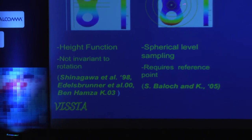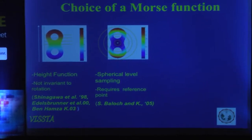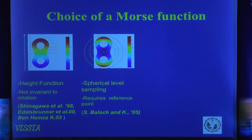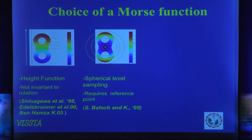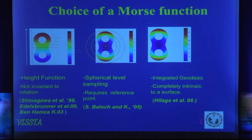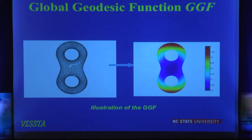In 2005, a former student of mine proposed the idea of the isotropic distance — you choose a reference point at the centroid and measure the distance from the centroid to the surface. You can prove it is a Morse function satisfying all its properties, and it is pose invariant — rotation invariant. The problem is it still requires this reference point, and we didn't quite like that. In 2006, Hilaga and Shinagawa proposed what they call the integrated geodesic distance. You can show it is a Morse function, and since it's intrinsic to the surface, it is invariant to any transformation.